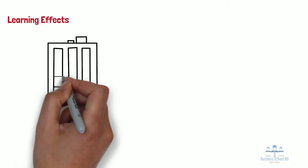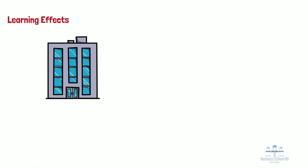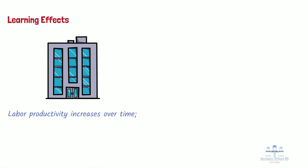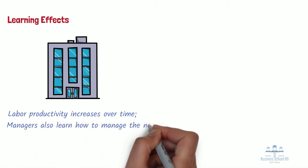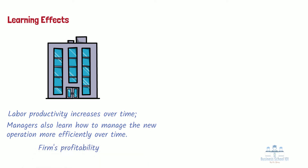First, learning effects. For companies, learning effects refer to cost savings that come from learning by doing. Labor productivity increases over time as individuals learn the most efficient ways to perform particular tasks. In new production facilities, managers typically learn how to manage the new operation more efficiently over time. Hence, production costs decline due to increasing labor productivity and management efficiency, which increases the firm's profitability.